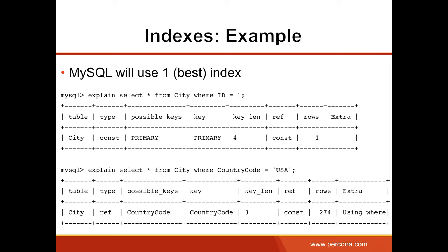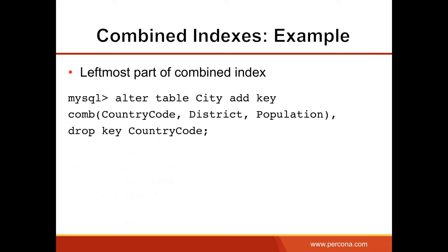We can also create a combined index — an index which consists of multiple keys. The important thing about MySQL is that it can use the leftmost part of any index. In this scenario, we have a combined index which starts with country_code. So an additional single-column index on country_code would be a duplicate — we don't need it. We create a combined index on country_code, district, population, and drop the separate country_code index.